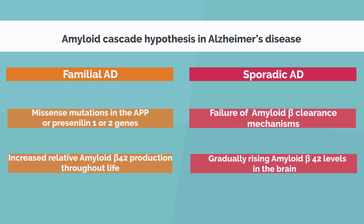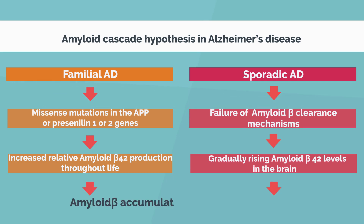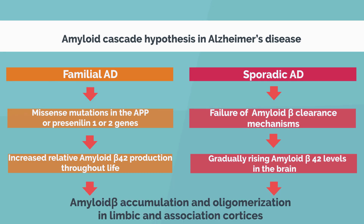In familial Alzheimer's disease, missense mutations in the amyloid precursor protein or presenilin 1 or 2 genes induce increased relative amyloid beta-42 production throughout life. On the other hand, in sporadic Alzheimer's disease, failure of amyloid beta clearance mechanisms induces gradually rising amyloid beta-42 levels in the brain. These increases cause amyloid accumulation and oligomerization in limbic and association cortices of the brain.